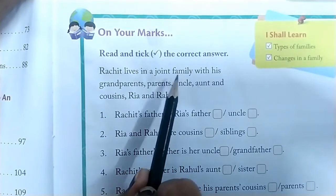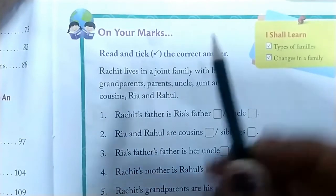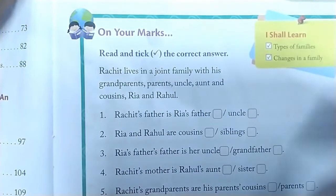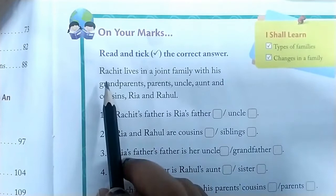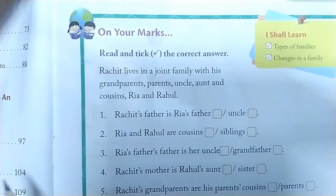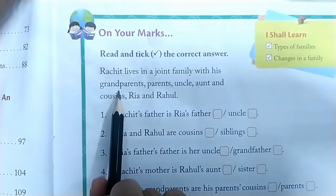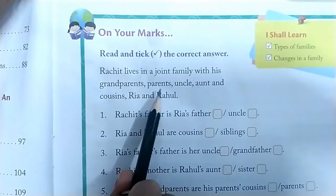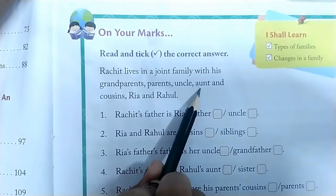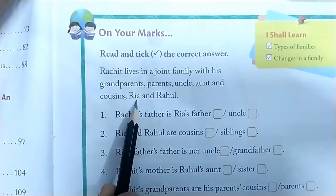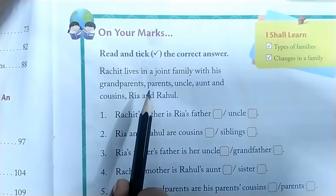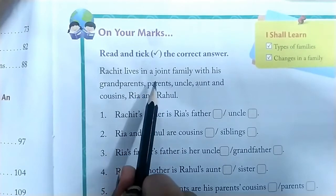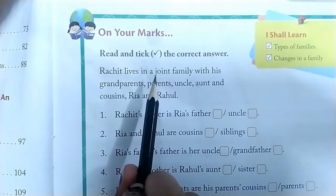Rohit lives in a joint family. Joint family means a big family where more family members live together. See who are the family members in Rohit's family — his grandparents, his parents, uncle, aunt, and cousins Rhea and Rahul. All these people live in the same house, and that's why this family is called a joint family.